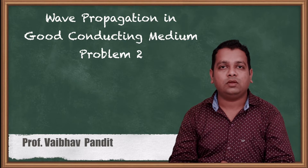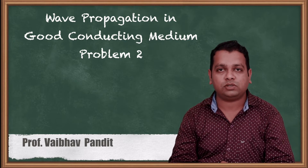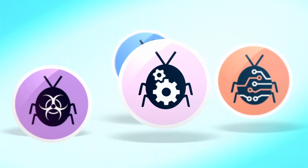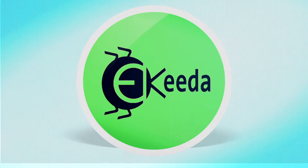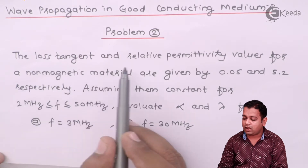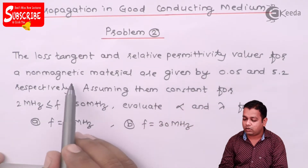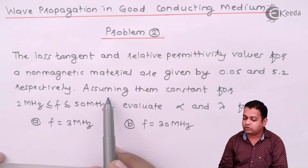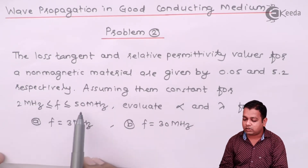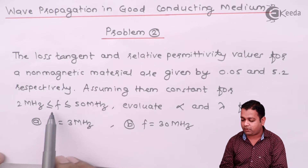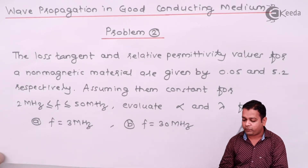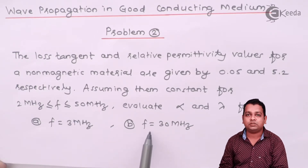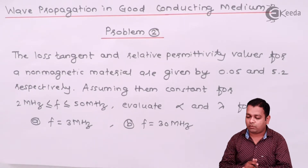Based on those formulae we solved one problem statement in the previous video. Let us take the next problem. The problem statement is: the loss tangent and relative permittivity values for a non-magnetic material are given as 0.05 and 5.2 respectively, assuming them constant for frequencies from 2 MHz up to 50 MHz. Evaluate alpha and lambda for: part A, f = 3 MHz, and part B, f = 30 MHz.